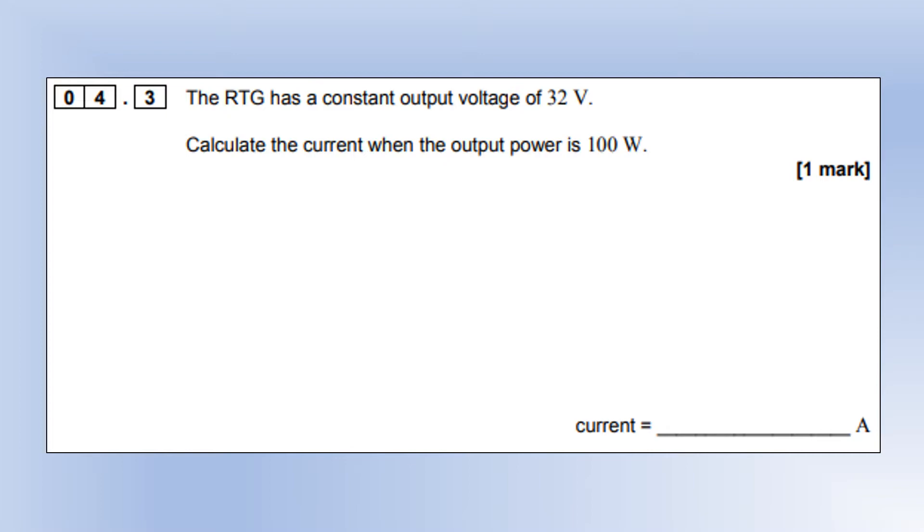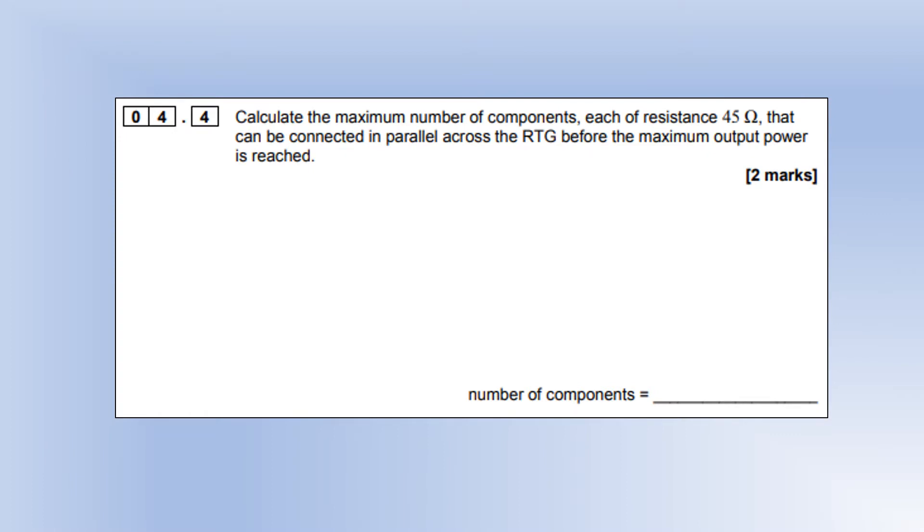The RTG has a constant output voltage of 32 volts. Calculate the current at 100 watts using P = IV. Next, calculate the maximum number of components, each of resistance 45 ohms, that can be connected in parallel before maximum power is reached. Find the current one resistor would draw: with potential difference of 32 volts and resistance of 45 ohms, one resistor draws 0.71 amps. The maximum current is 3.1 amps, so we can only have four resistors before reaching the maximum—five would exceed it.